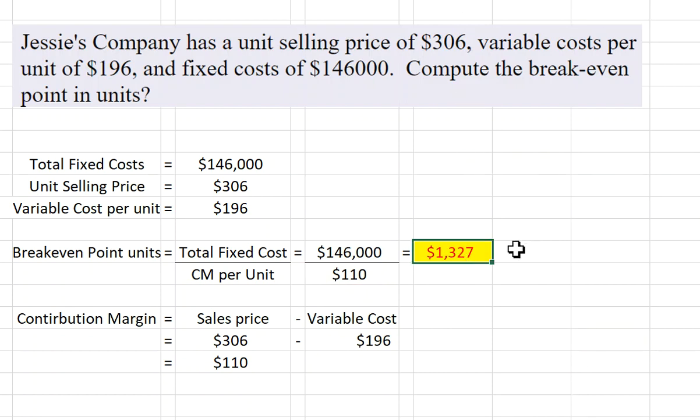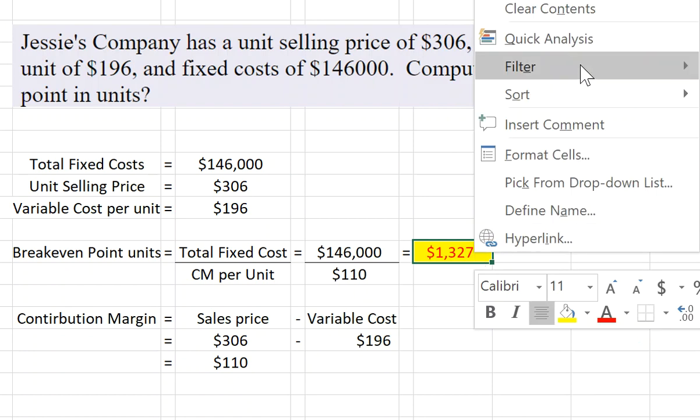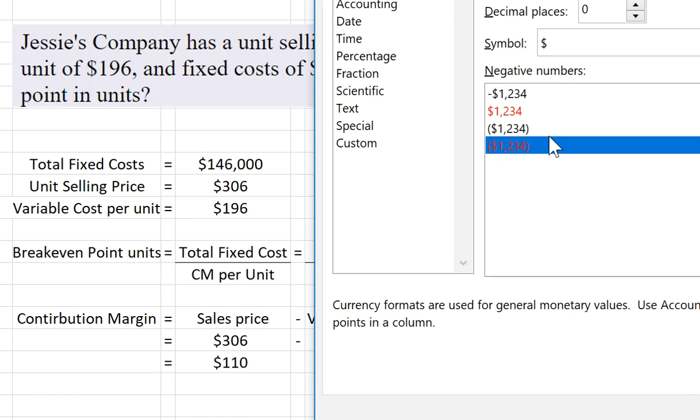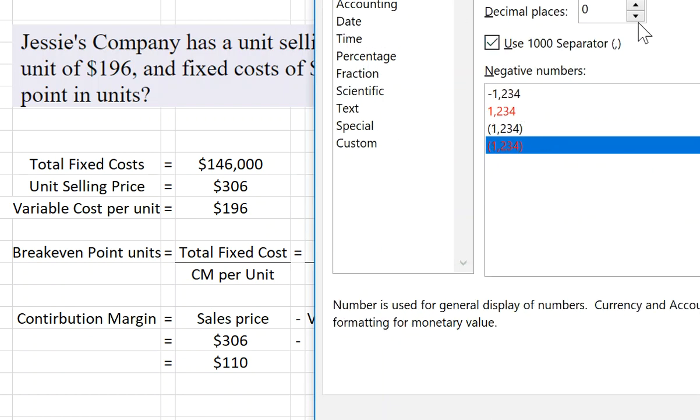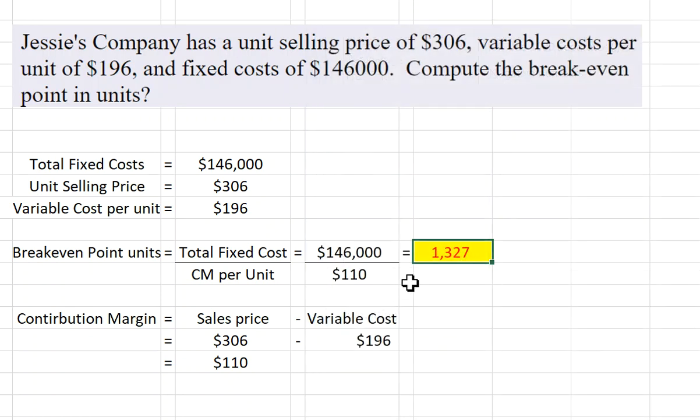Oh, I take that back, those are not dollars, that is not set up properly, so let me go ahead and change that so you don't get confused. Like I said, that is not dollars, that is simply a number. They need to sell 1,327 units to break even.